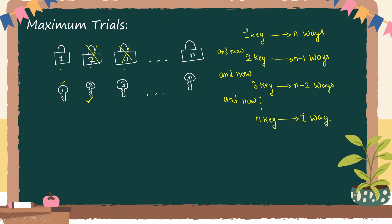So what we see is: for the first, second, third, and so on till n, we have n, n minus one, n minus two, till one. Now, one important thing to clarify is the word we are using — it's 'and'. As per the fundamental principle of counting, whenever you see 'and' you should multiply.